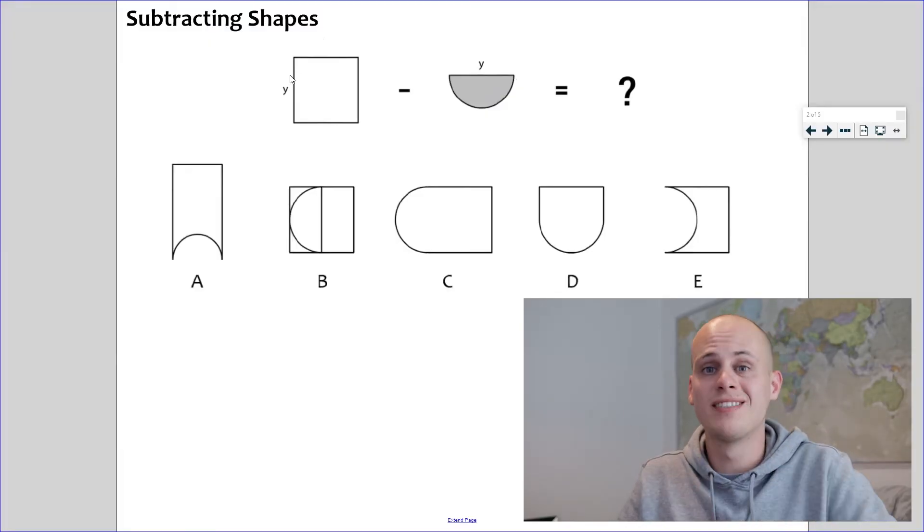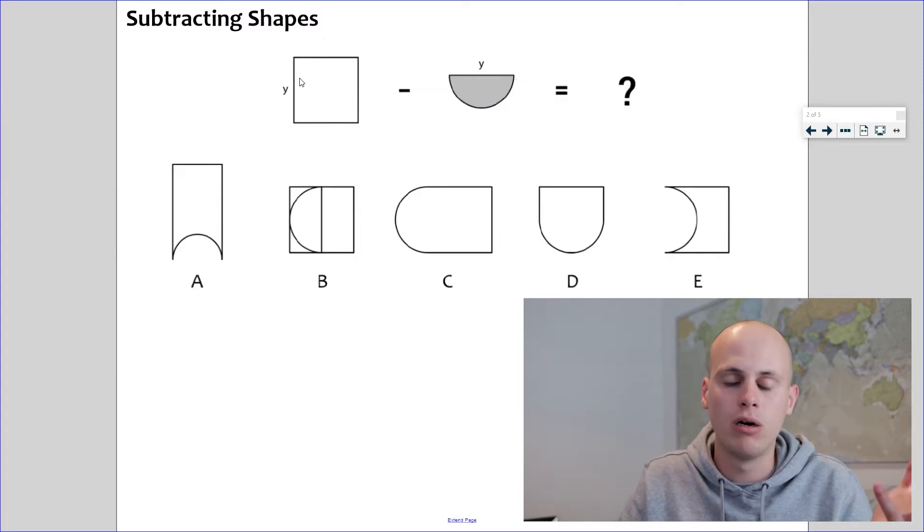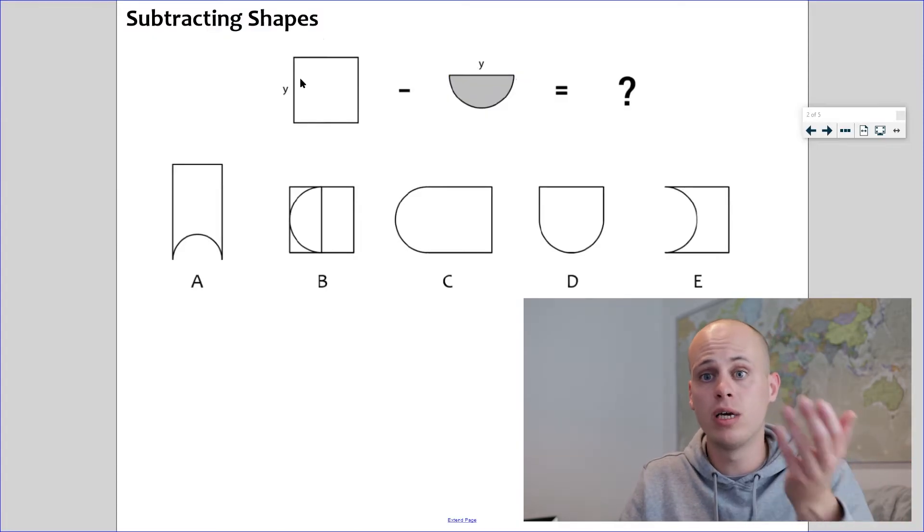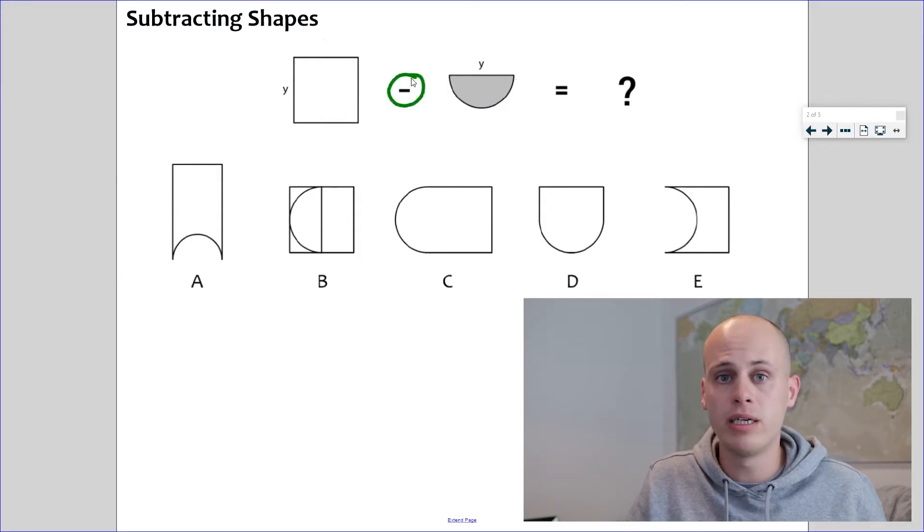Onto the second rule, which is of course subtracting shapes. Now just like adding shapes, we're still combining the two shapes together. However, instead of adding a part onto one end, we are going to cut away from the inside of the shape instead. So we are given this clue by the minus sign, and if that's not enough, the shape is also shaded in grey.